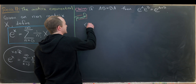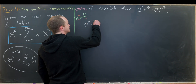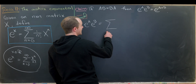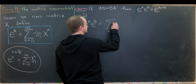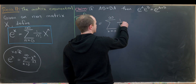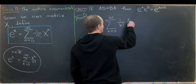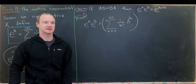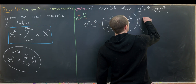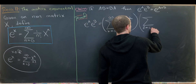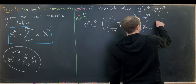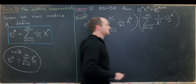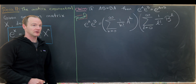Let's take our e to the A times e to the B and expand each of those. This will be the sum as k goes from zero up to infinity of one over k factorial times A to the k — the kth power of the matrix A — multiplied by the sum as l goes from zero to infinity of one over l factorial times B to the l, the lth power of the matrix B.